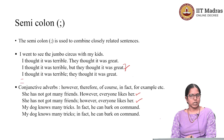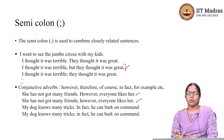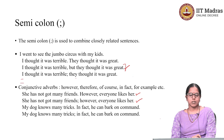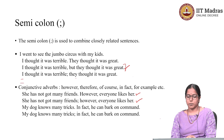I thought it was terrible is my opinion and they thought it was great is their opinion. Therefore, these two sentences are closely related. Now, how do I connect these two sentences? There are two ways. One is you introduce a comma, in which case you connect these two sentences with a conjunction. The conjunction to use here is 'but': I thought it was terrible, but they thought it was great.